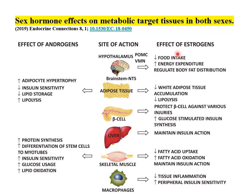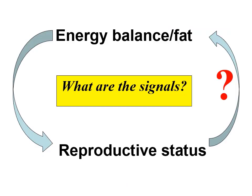Oestrogens have many effects and androgens have many effects — multiple sites of action of both steroids. We're going to try to understand how the system works and what some of the signals might be, but remember it is very much a two-way process: energy balance affects reproductive status and reproductive status affects energy balance.